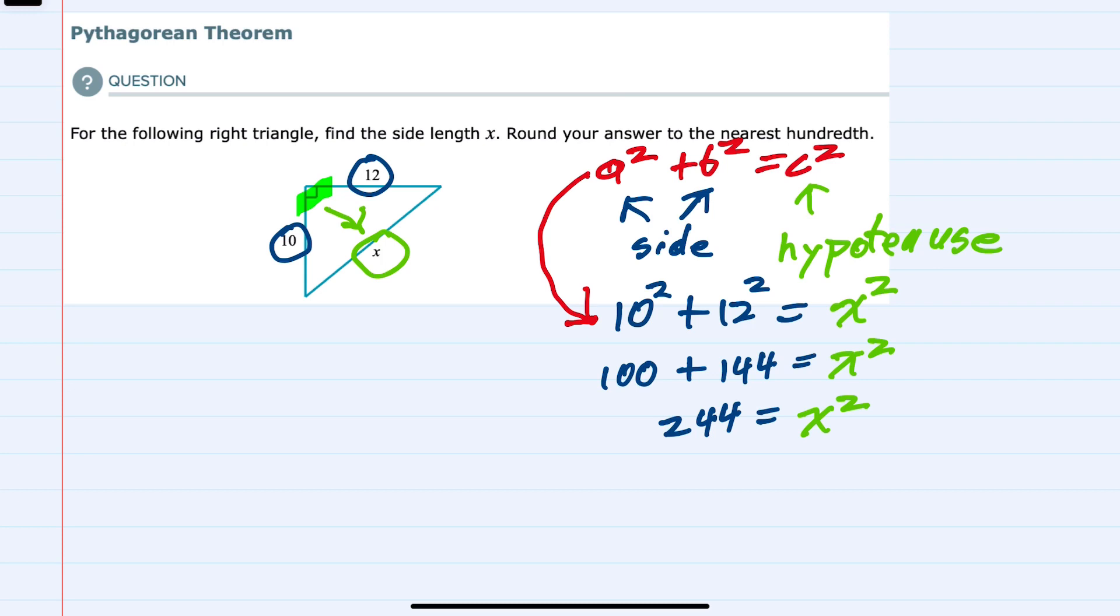Our last step is going to be to take the square root of both sides so that we can solve for x. On the right-hand side, the square root of x squared is going to give us just the x by itself. And on the left-hand side, we have the square root of 244. Using a calculator here, since that's not a perfect square, we would have 15.620499 and more digits.